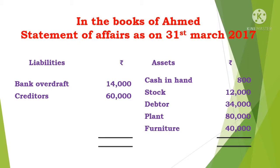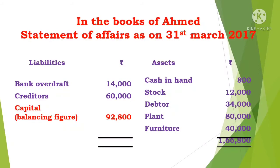The asset side total value is 1,66,800. On the liability side, total value is 74,000. So 1,66,800 minus 74,000 gives a difference of 92,800. This is the opening capital — the balancing figure. The liability side total is 1,66,800, and the opening capital value is 92,800.